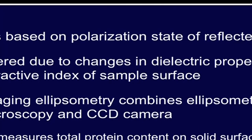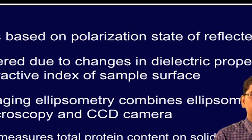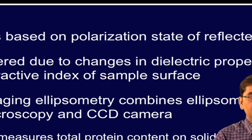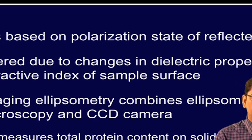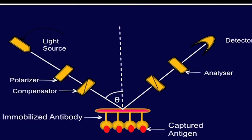Ellipsometry is based on the polarization state of the reflected light, which is altered due to the changes in the dielectric property or the refractive index of the sample surface. Imaging ellipsometry combines an ellipsometer, microscopy, and a CCD camera, which can measure the total protein content on a solid surface. Here I have shown you a configuration for an ellipsometry-based label-free technique.